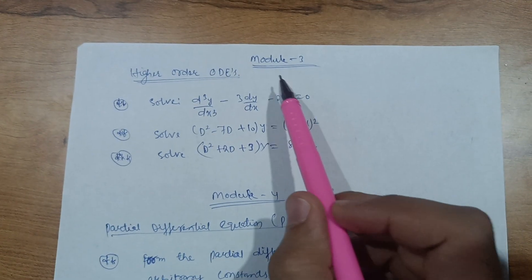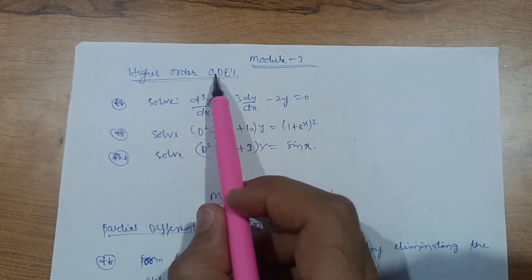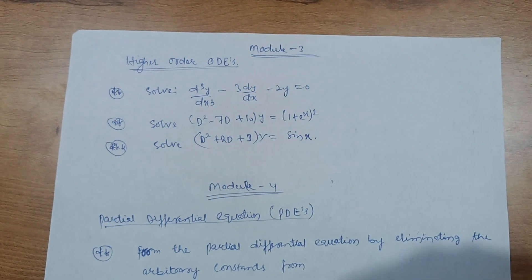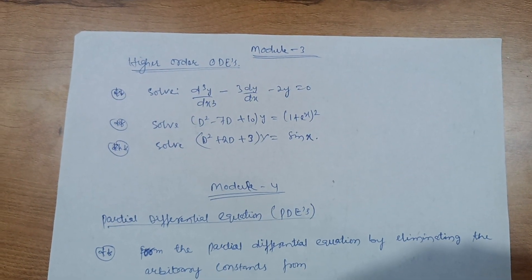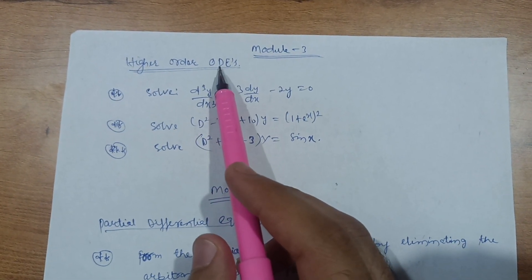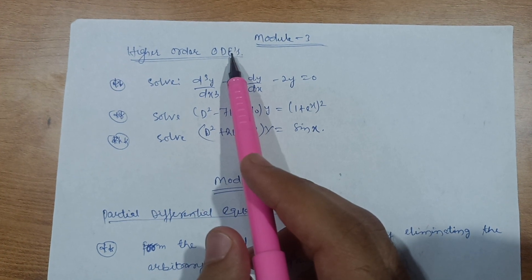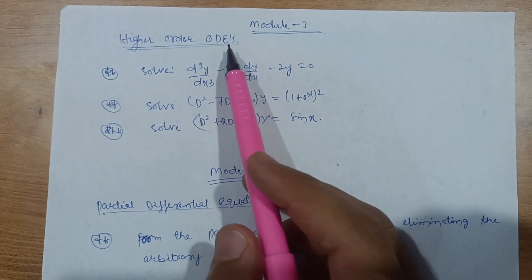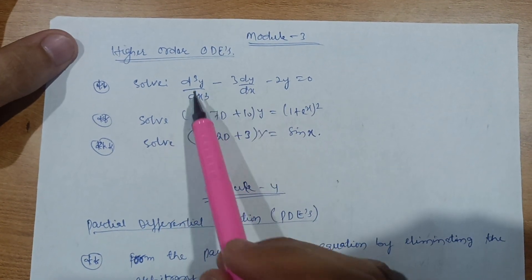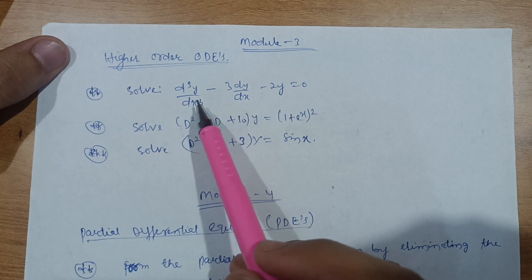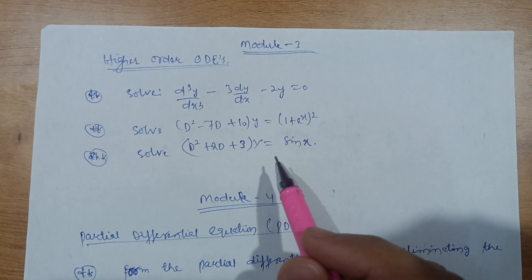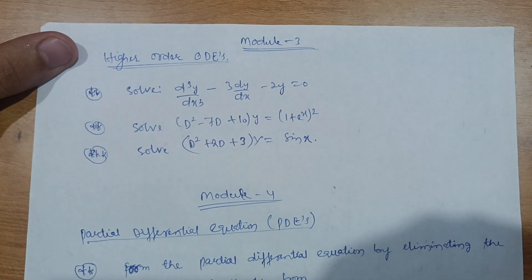Module 3 covers higher-order ordinary differential equations. I cannot say this is the easiest — if you have studied differential equations in 12th class it will be manageable, but I cannot call it a passing module. Most students get stuck in this module. If you ponder a little, you can solve these equations, but it is not straightforward.